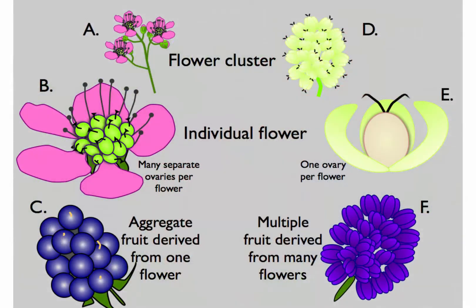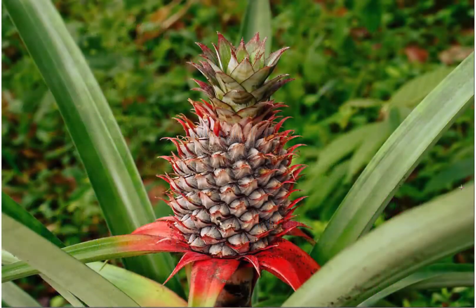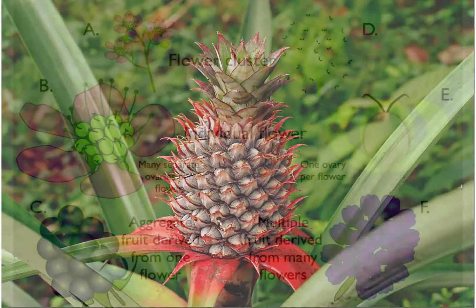Multiple fruits are derived from several to many individual flowers in a single inflorescence. Each flower has its own receptacle, but as the flowers mature separately into fruitlets, they develop together into a single larger fruit, as in aggregate fruits. Examples include mulberries and pineapples.